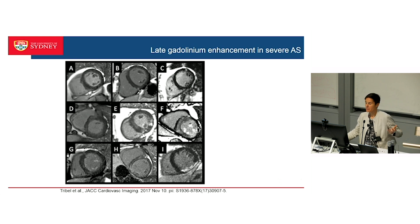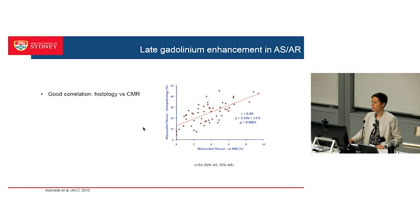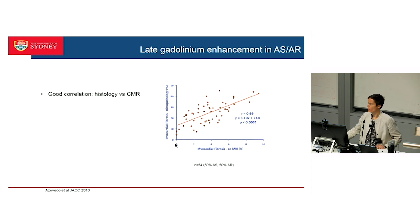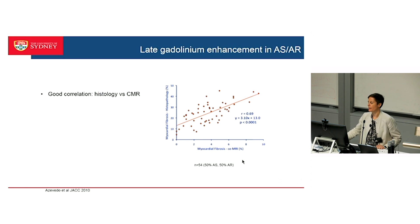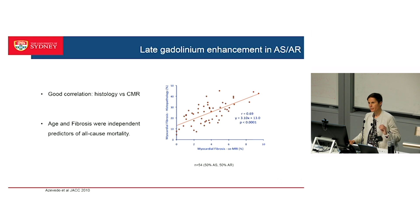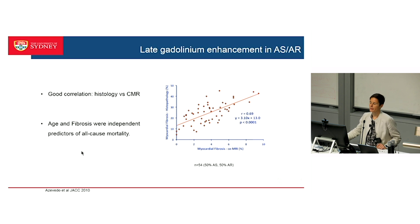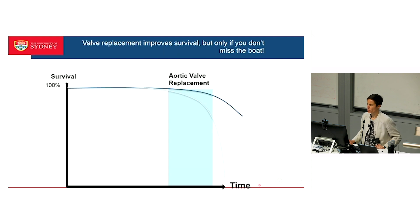But otherwise, in some people it looks like they don't have any focal fibrosis, and in others they've got quite extensive involvement. This is actually a Brazilian study of about 54 patients where they demonstrated a very close relationship between the late gadolinium enhancement and the fibrosis as detected histologically. And importantly, this JAK paper was one of the first to really demonstrate that fibrosis, whether measured by MR or by histology taken at biopsy, was a predictor of all-cause mortality.